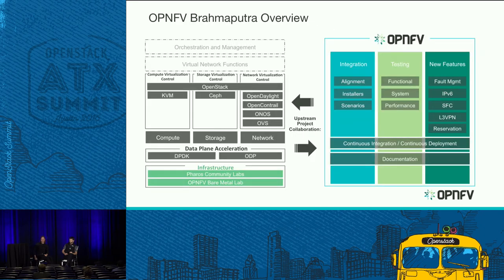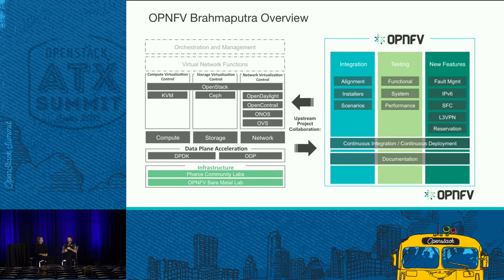Talking about Brahmaputra features: from a feature perspective, a lot of what we have are foundational features. We spent effort on IPv6, and we have IPv6 support, SFC, L3VPN services, resource reservation use cases, and fault management. These in their own right are useful, but they don't yet solve the full NFV problems.